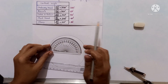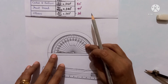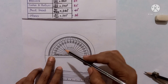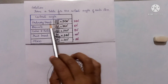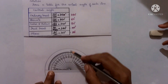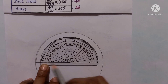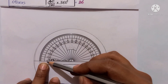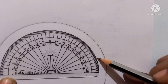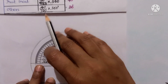Take your protractor and place the midpoint of the protractor on the center of the circle. The baseline of the protractor should align with the radius. The first item is ordinary bread representing 160 degrees. Since the baseline is towards the left, start from zero and measure up to 160 degrees. Put a point at the 160 degree mark, then remove the protractor.